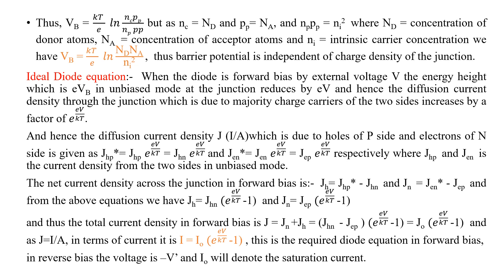The second derivation is for the ideal diode equation. The complete equation is derived here. When the diode is forward biased by external voltage V, you know that the energy barrier height at the junction reduces by an amount eV. If it is reducing, majority charge carriers of the two sides will move through the junction, so current through the junction is due to electrons of the n side and holes of the p side.